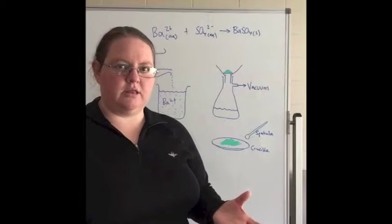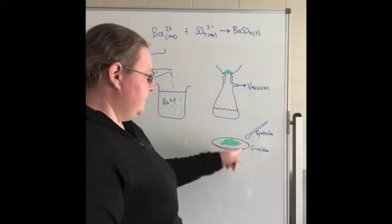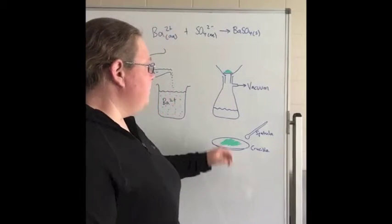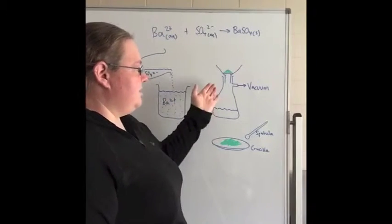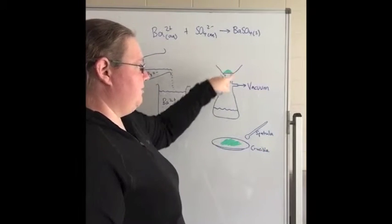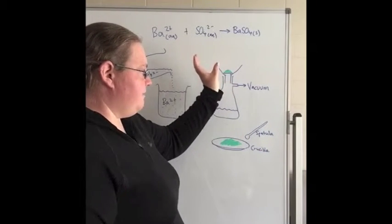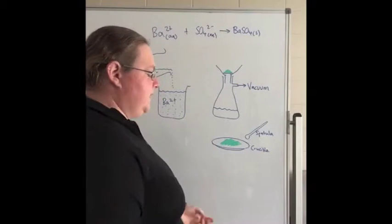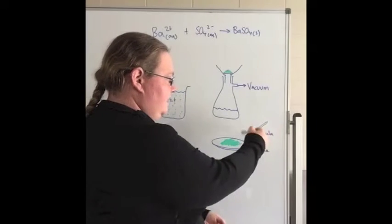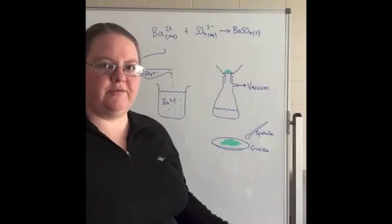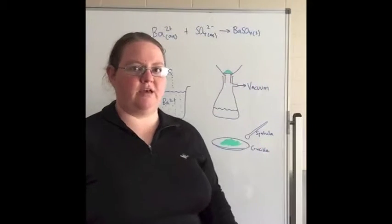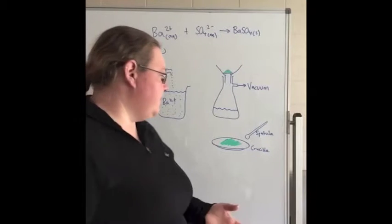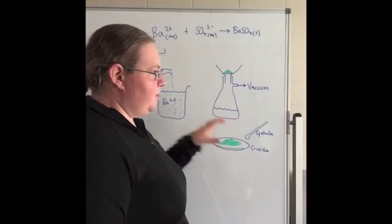So what you need to do then is actually take your precipitate and transfer it onto a crucible. You pre-weigh that crucible so you do a weighing by difference scenario. But again, this transfer from our vacuum flask filter onto our crucible is another source of error. You might drop some on the table, there might be a little bit on the spatula, it's going to be quite hard to get it all out of your vacuum flask. So that's another source of error.